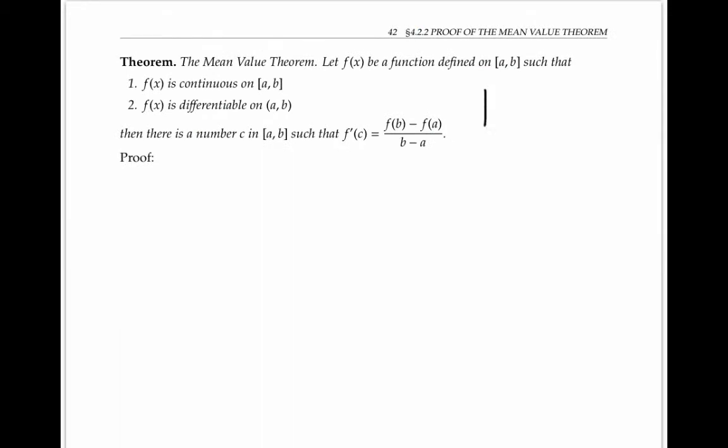A clue for how to prove the mean value theorem comes from drawing a picture. We're looking for a point where the tangent line has the same slope as the secant line. And based on the picture, it looks like that point occurs at a place where the vertical distance between the function and the secant line is at a maximum. So let's try to write down a formula for that vertical distance and see where that takes us.